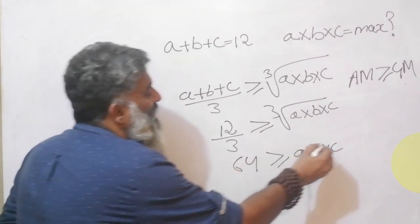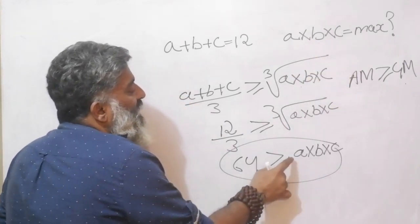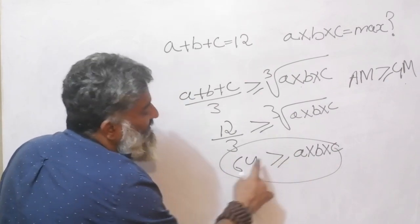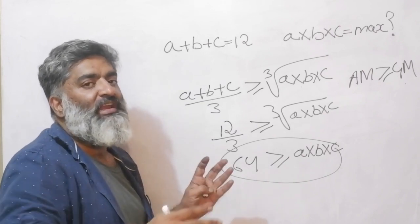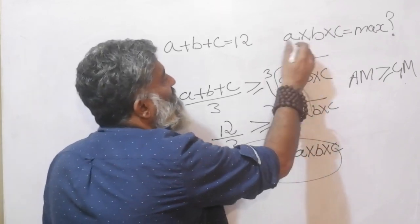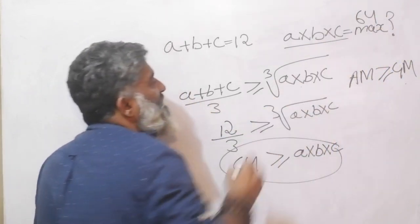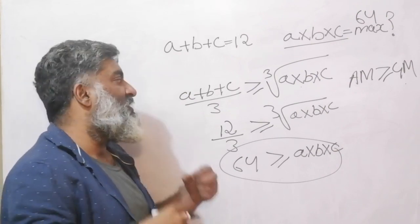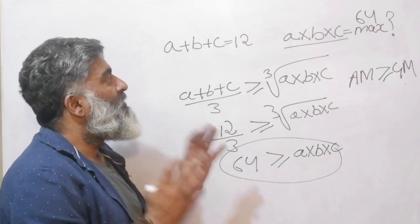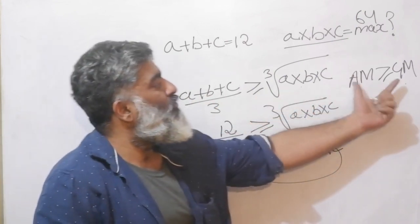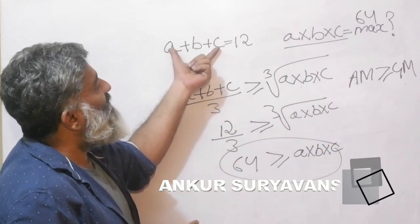From this inequality, a·b·c is less than or equal to 64, so the maximum value of a·b·c is 64. That is the essence of the game. The AM part was given to me and the GM part involves the product I needed — so this type of problem is very suitable for this approach.